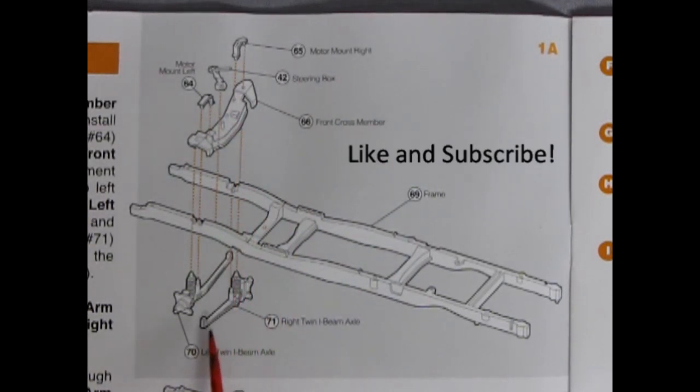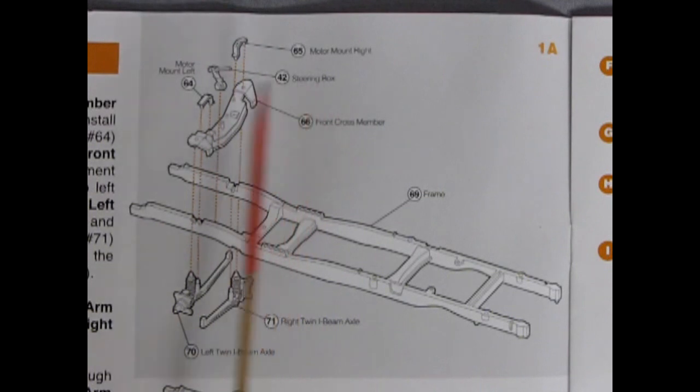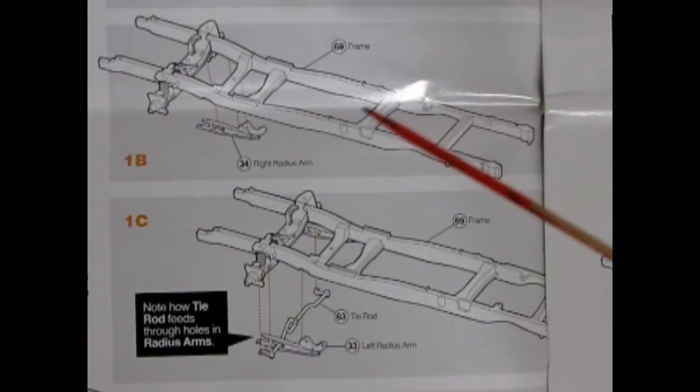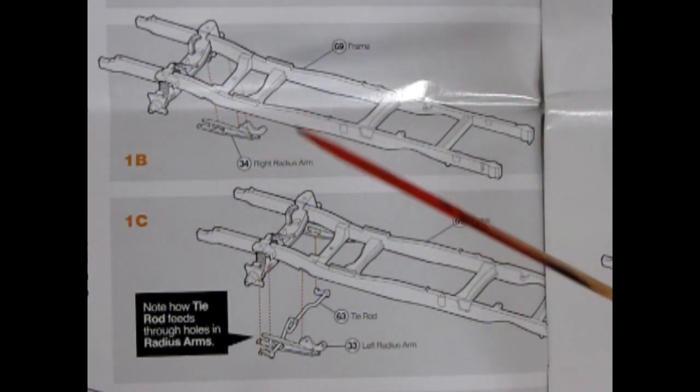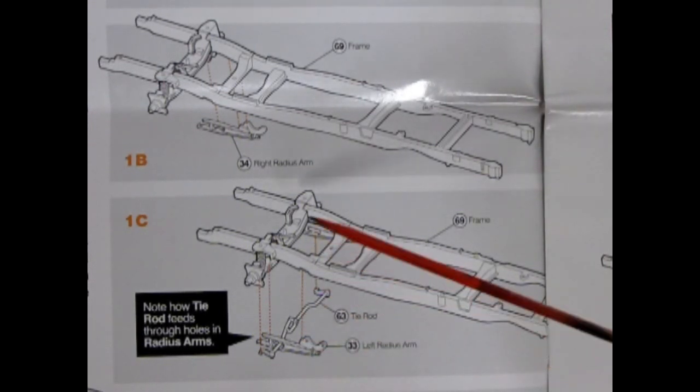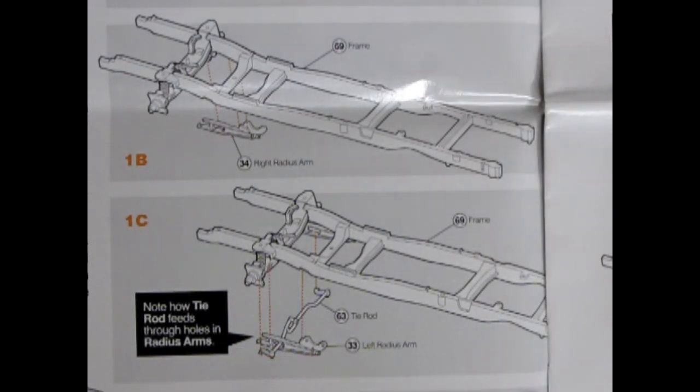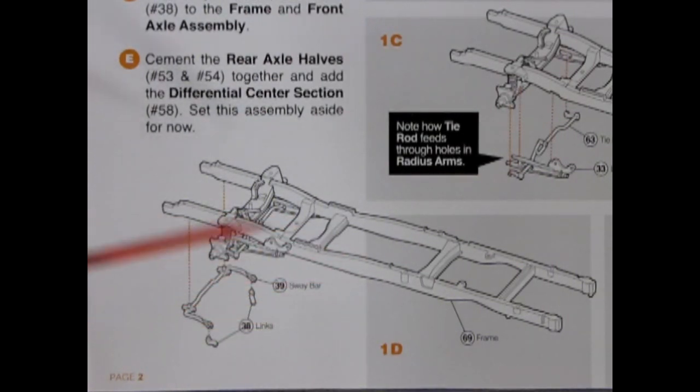We've got our right twin I-beam axles, our front steering cross member, steering box, and motor mounts. Our second panel here shows our right radius arm gluing up onto the frame. And our third panel here shows the tie rod and left radius arm gluing up into the frame. It says note how the tie rod feeds through holes in radius arms.